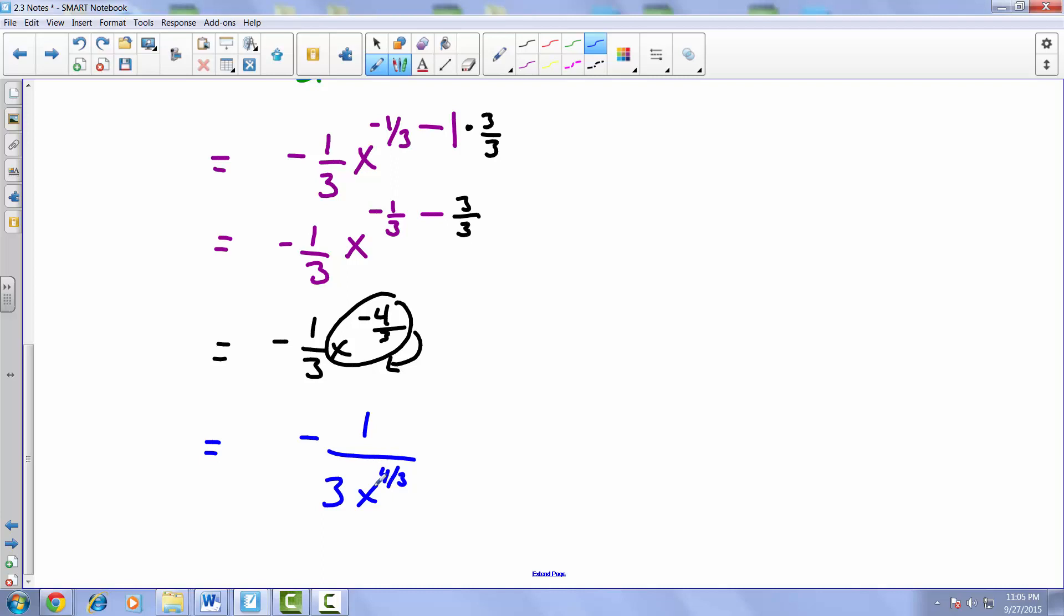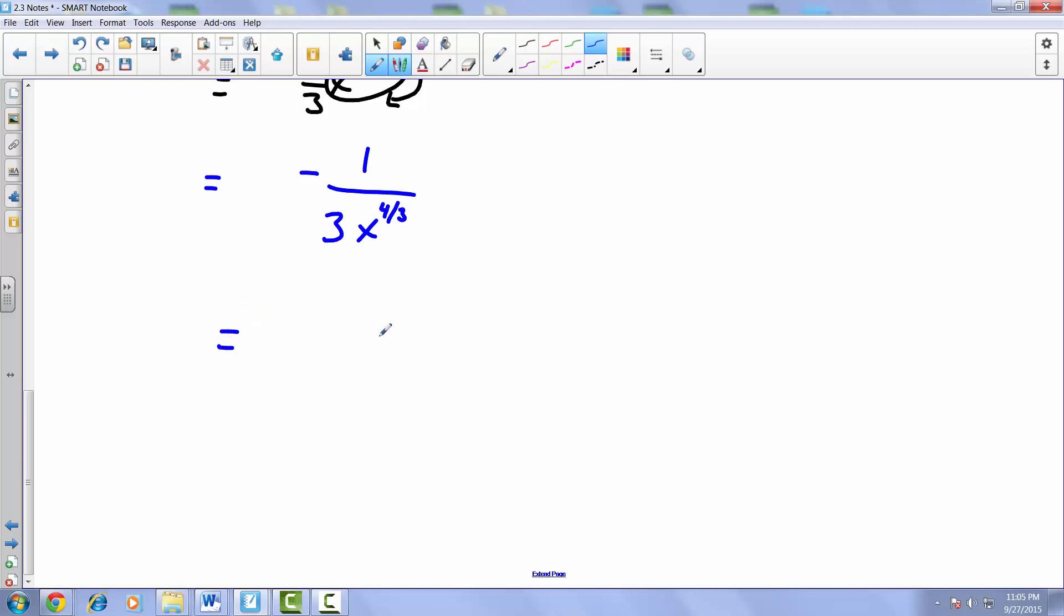Just kind of cleaning this up a little bit, you could leave your answer like that, but you may also see like a multiple choice write the answer as this: minus 1 over 3x times the cube root of x. But either one are correct, so that would be our final solution for example 5 from our 2.3 set of notes.